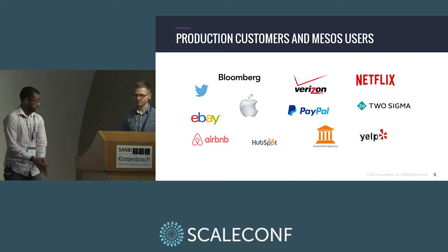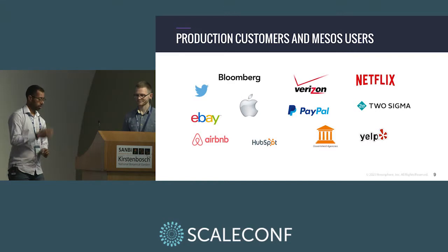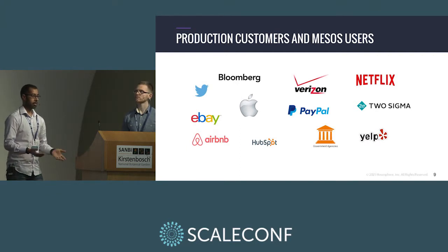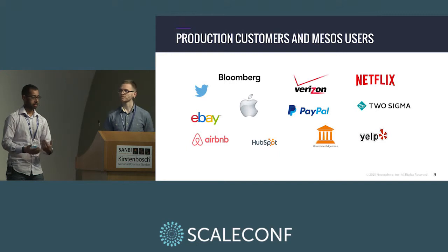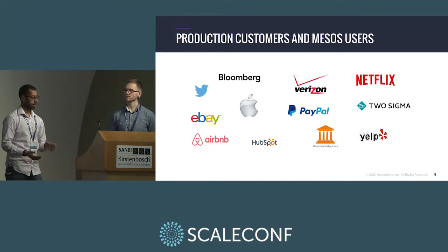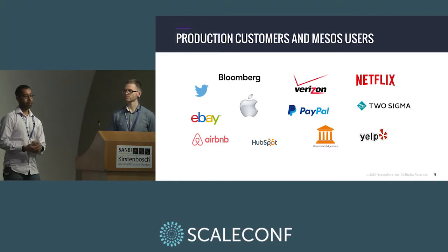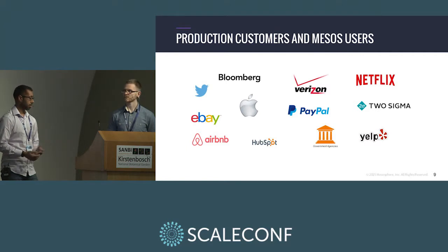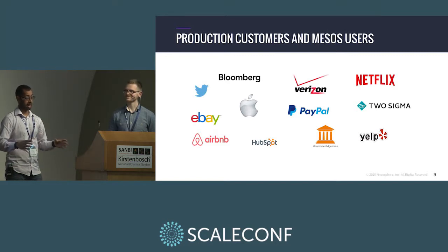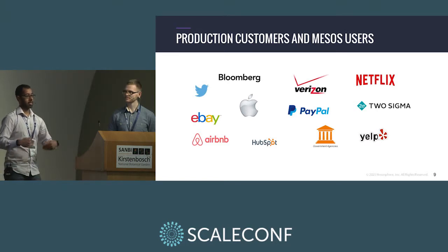These are all the companies using Mesos in production right now. Apple is a really interesting one — they wanted something similar to Google's Borg system, and instead of writing their own, they chose to use the open source Apache project. Yelp does something really interesting around continuous integration: every time they deploy their website, it runs a series of integration tests on Mesos using Amazon spot instances — 1,000 instances in parallel — to run integration tests against every aspect of their website. That means every push is thoroughly tested before getting pushed to production.